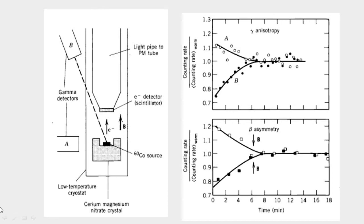This is the experimental setup. This is the sampled Cobalt-60 source and it is kept in an evacuated tube. This is the detector for your electrons — gamma is also emitted along with this, so you also have gamma detectors. What you are doing is keeping the sample here, placed in a strong external magnetic field at low temperature.